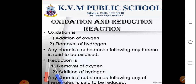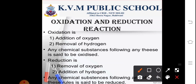Talking about oxidation and reduction reactions. Oxidation reactions are those reactions which involve addition of oxygen, removal of hydrogen, and loss of electrons. Any substance undergoing any of these is said to be oxidized.